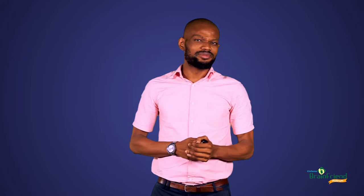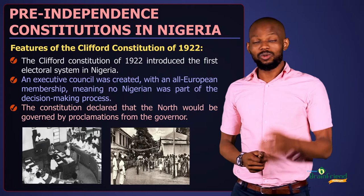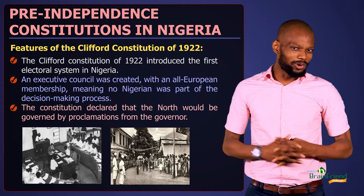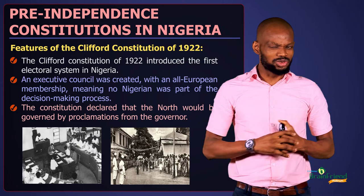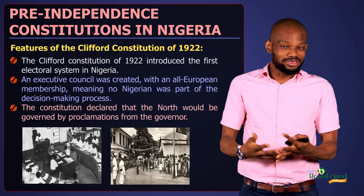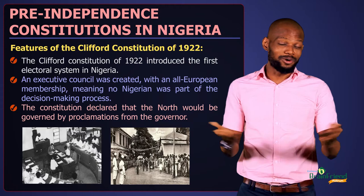One of the major features of the Clifford Constitution was that it created the first electoral system in Nigeria. The Clifford Constitution made provisions for Nigerians to participate in the decision-making process, but it was more or less a trap. An electoral system was created so Nigerians could participate — they could contest for offices or public posts, but only those allowed by Britain. There were also strict criteria: for example, £100 was required as the minimum amount a person contesting for any public office was to have.